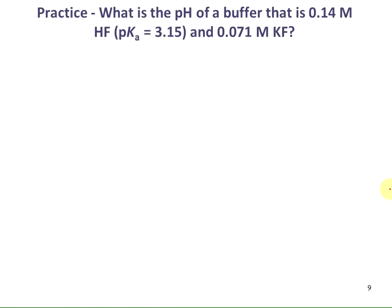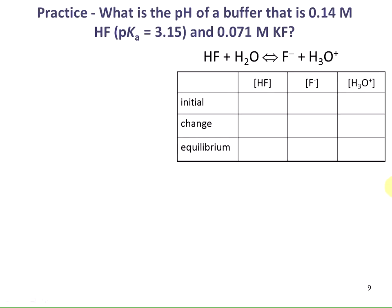Let's find the pH of a buffer that is 0.14 M HF with a pKa of 3.15, and 0.071 M KF as the conjugate base salt. Writing the equation: HF + H₂O ⇌ F- + H₃O+. Setting up the ICE table: initially 0.14 M HF, and since KF completely dissociates, 0.071 M KF gives 0.071 M F-. The change is minus X from HF, plus X to F-, plus X to H₃O+, giving equilibrium concentrations.